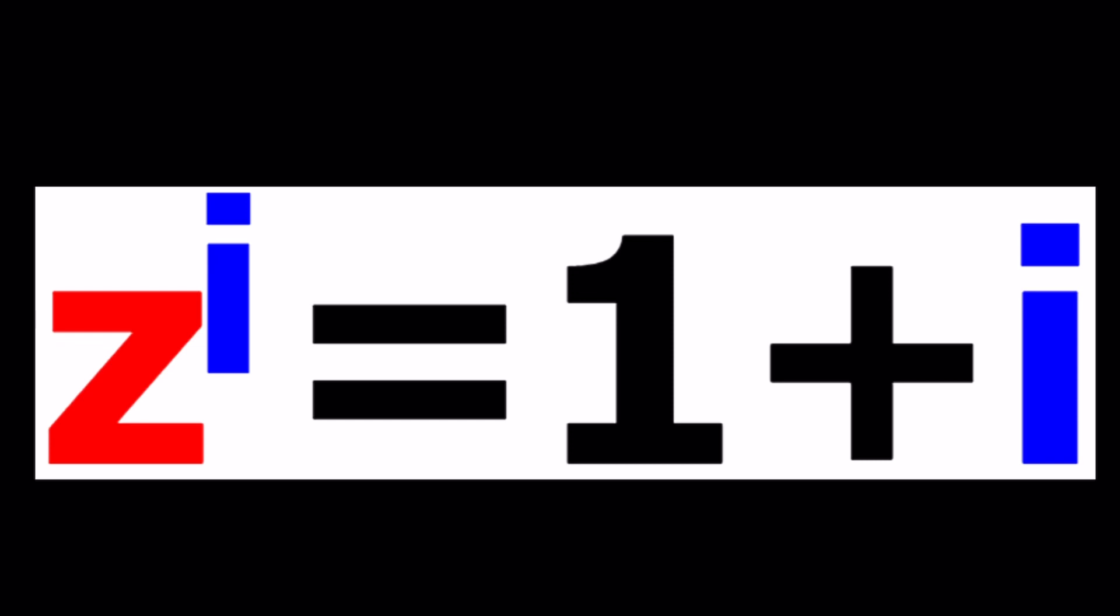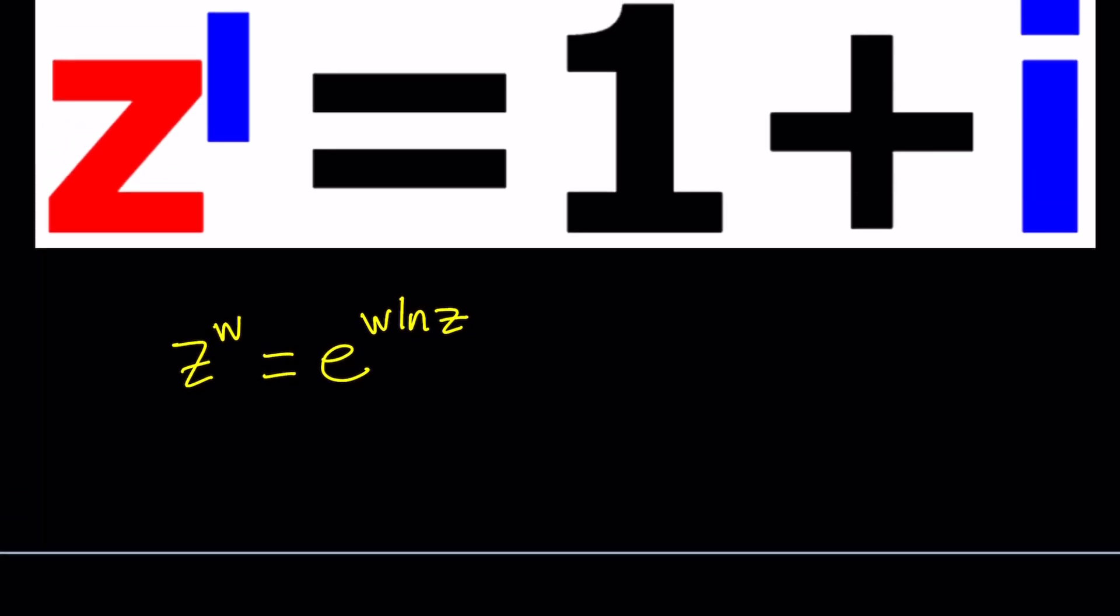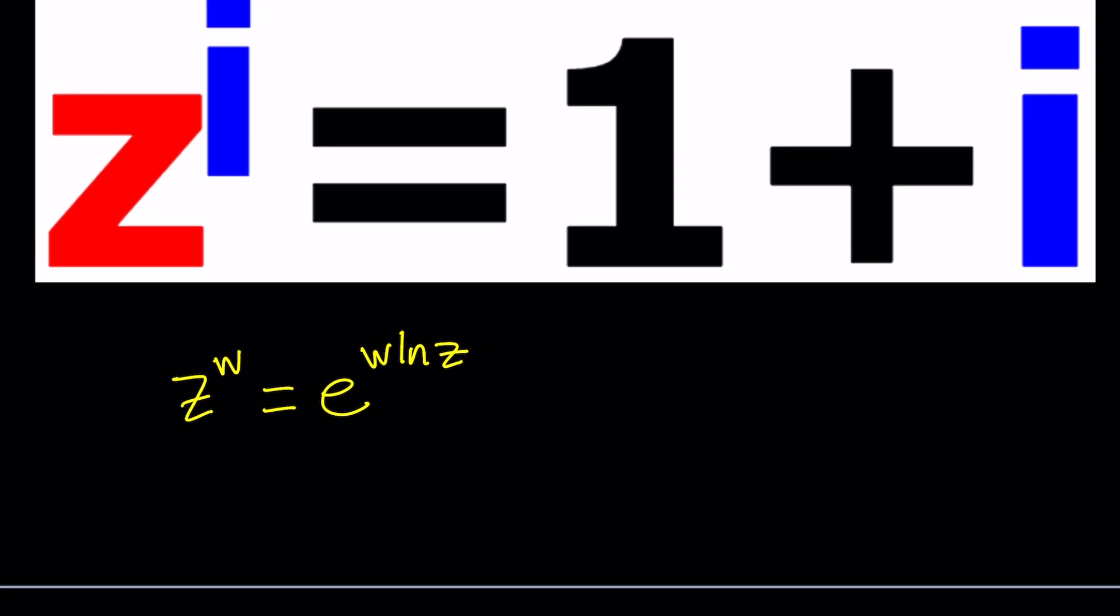First of all we're going to be considering the complex exponential. So whenever you have something like z to the power w where z and w are complex numbers you can write this as e to the power w ln z. All right great so let's go ahead and see how we can solve this problem using this complex exponential property.